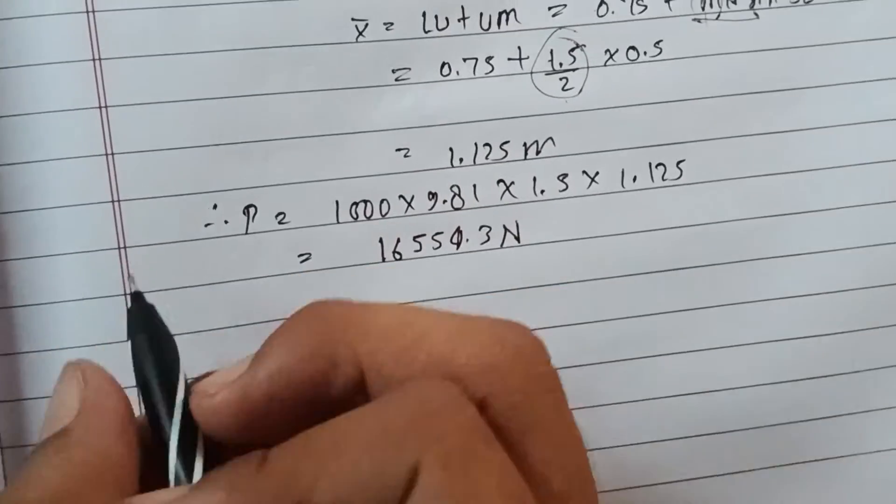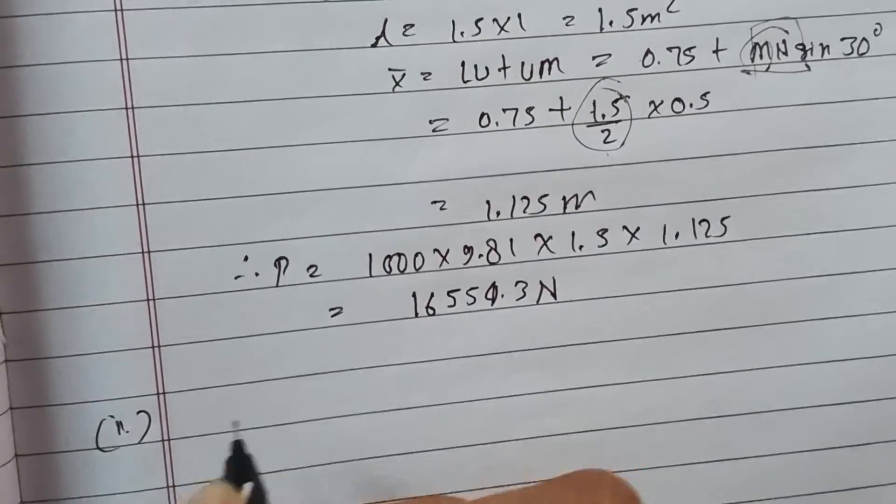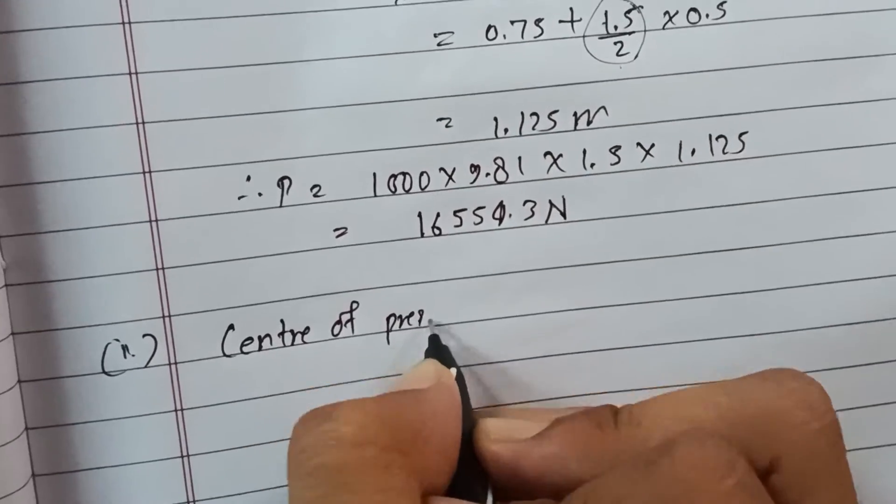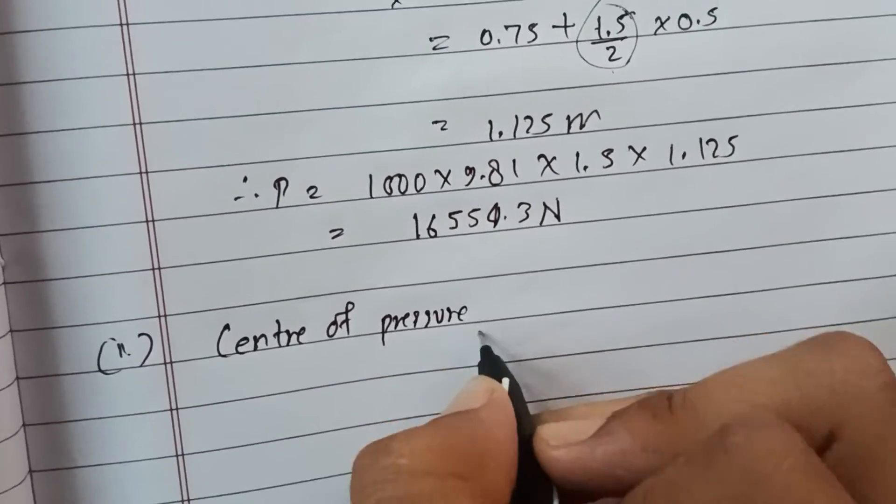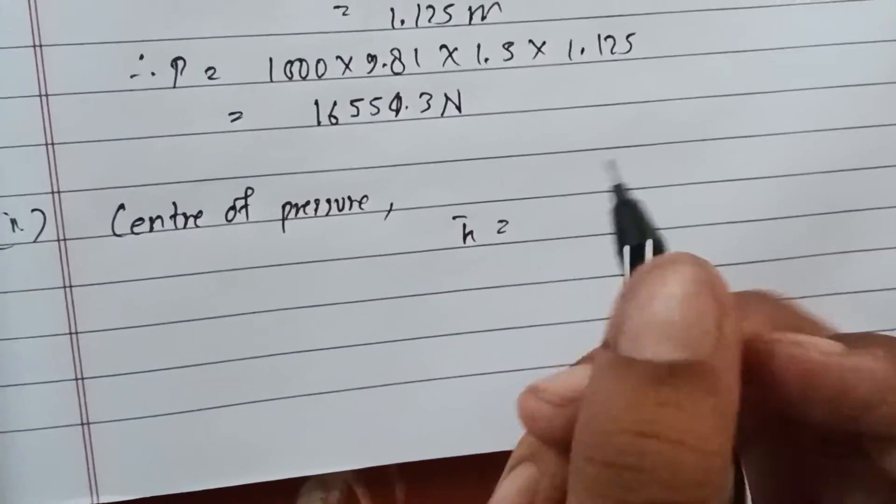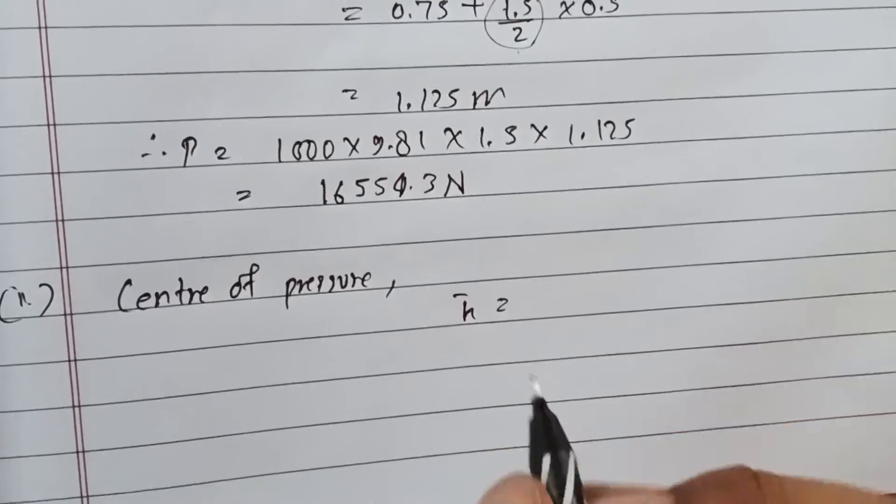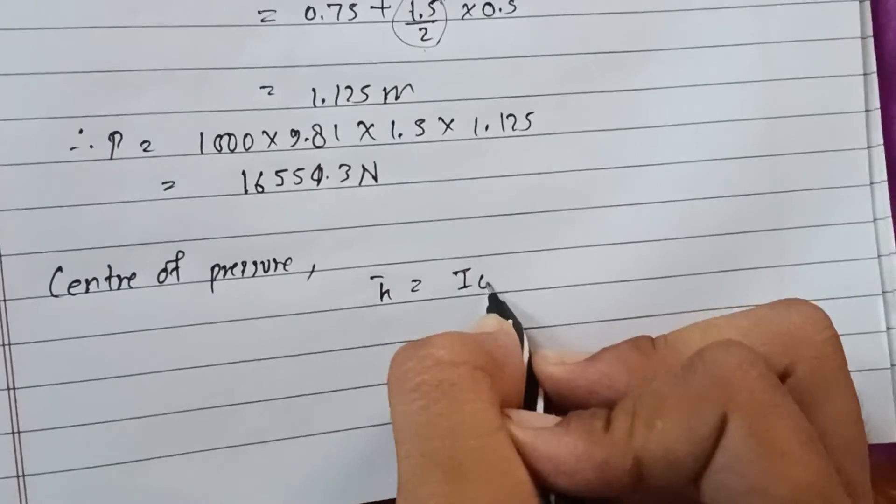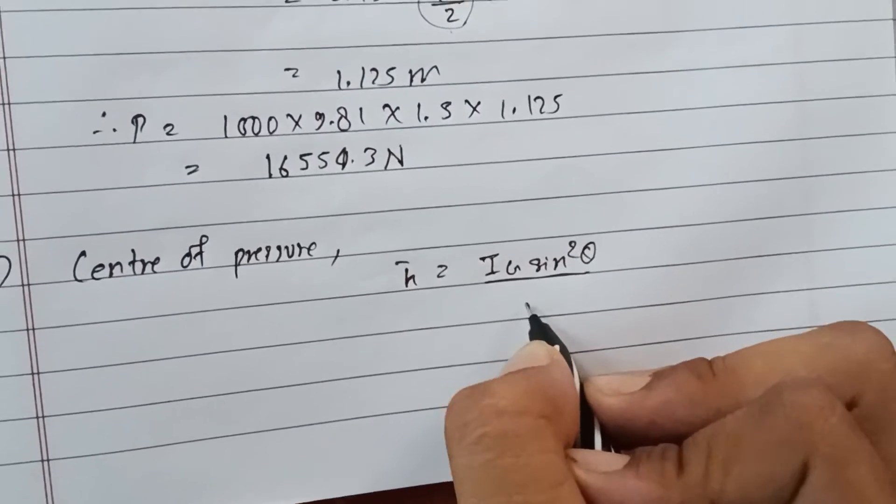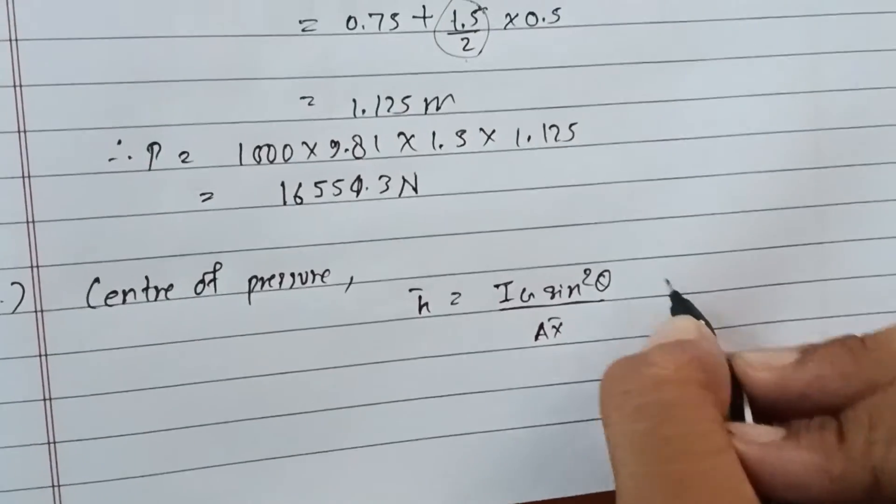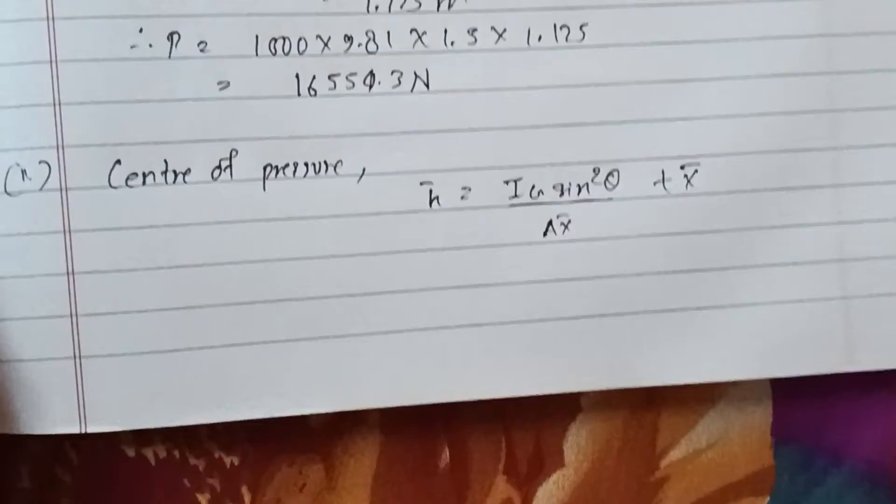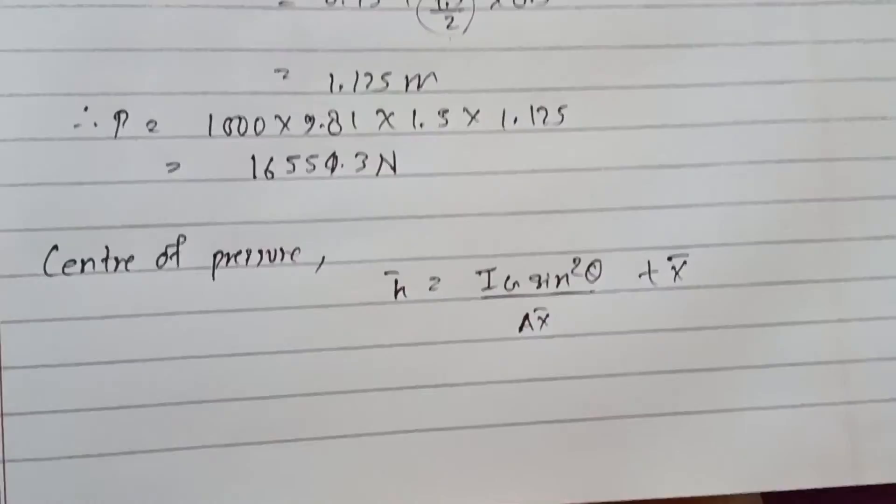Second part: center of pressure. For center of pressure, we'll use the formula for inclined immersed surface: y-bar equals I_G sine squared theta divided by A x-bar plus x-bar.